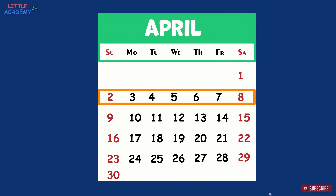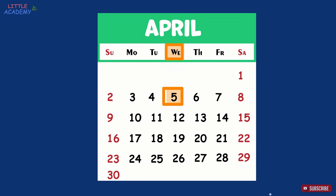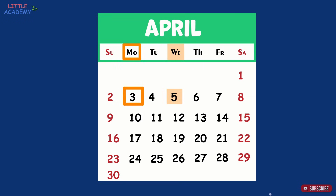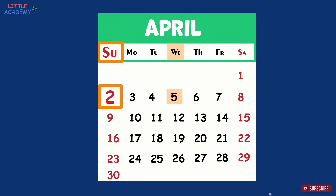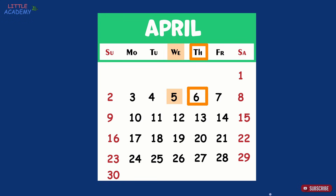For example, if today is Wednesday April 5th, then yesterday was Tuesday April 4th, the day before yesterday was Monday April 3rd, and the day before was Sunday April 2nd. Tomorrow will be Thursday April 6th, and the day after tomorrow will be Friday April 7th.